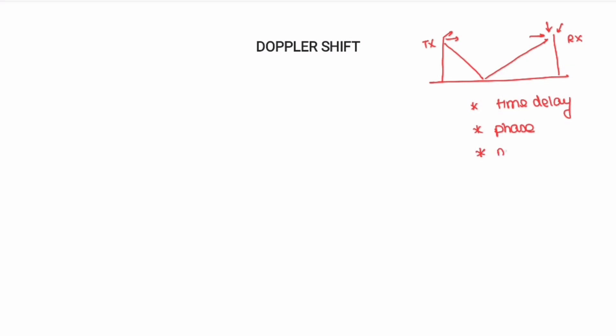The third change is noise. Noise added to the signal differs from one path to another. If there are no obstacles between the transmitter and receiver, noise added to the signal is less. If there are more obstacles, more noise will be added to the signal. So in any path, the noise added will also differ.